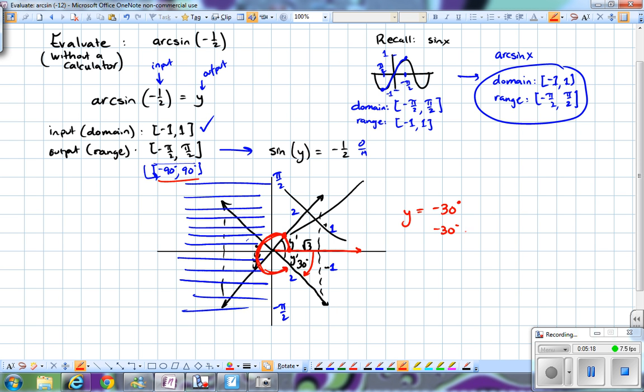I can convert this to radians by multiplying by pi over 180 degrees, which gives me negative pi over 6. Therefore, I can say that arc sine of negative 1 half is equal to negative pi over 6.